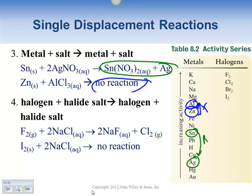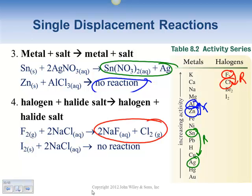The same thing applies with the halogens. When comparing fluorine and chlorine: we start at fluorine and go to chlorine — since we go down the list, there is a reaction. When comparing iodine and chlorine: going from iodine to chlorine means going up the list — no reaction.